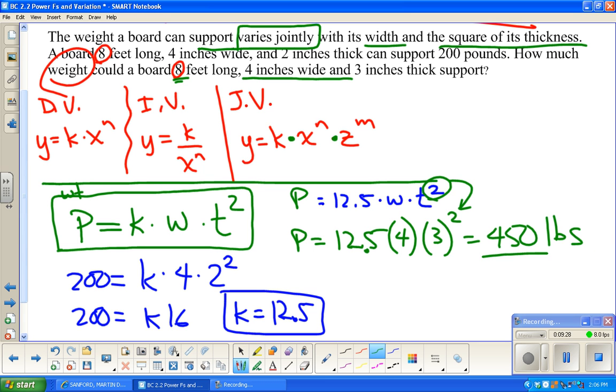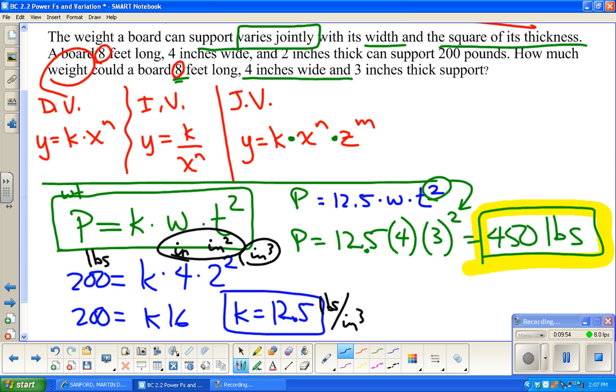In a science class, they would probably want you to keep track of your units all the way through this thing. If this is in inches, and this is inches squared, altogether this is inches cubed. This was pounds. So, k would be pounds per inches cubed. Once I multiply by my constant and all that stuff, all the inches are going to cancel out. I'm going to be right back to pounds.